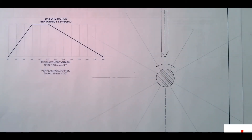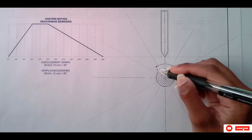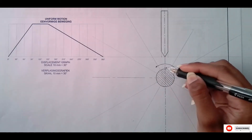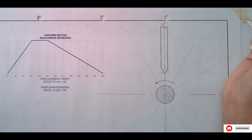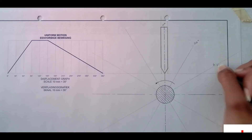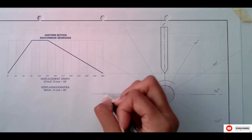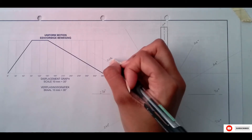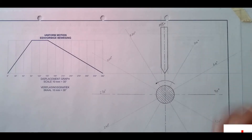We are trying to represent the movement of the follower on the cam profile. The cam will be rotating in an anti-clockwise direction. We label in the opposite direction — so we label clockwise. That means we have zero degrees here, then 30, 60, 90, and so on, up to 360 degrees which coincides with zero degrees.